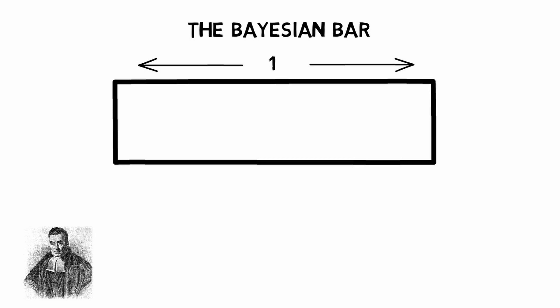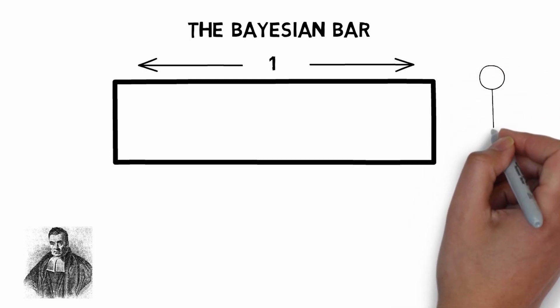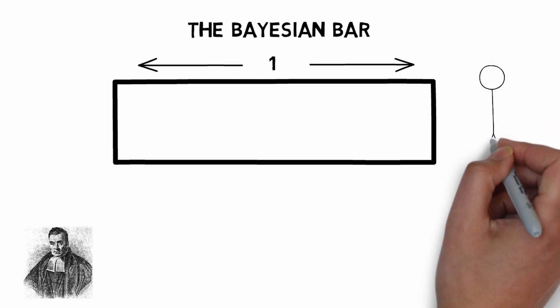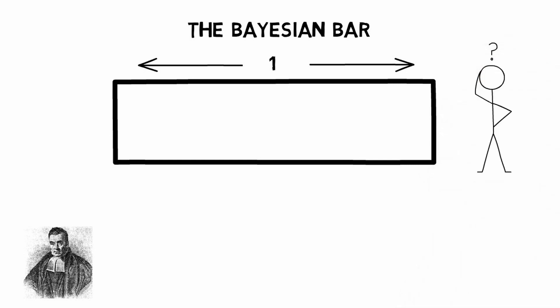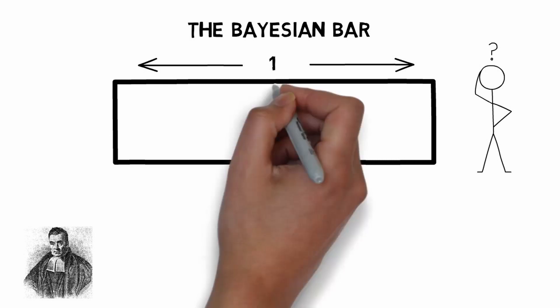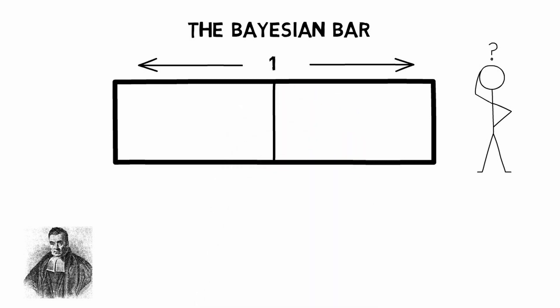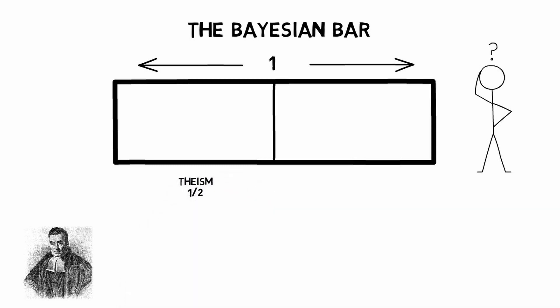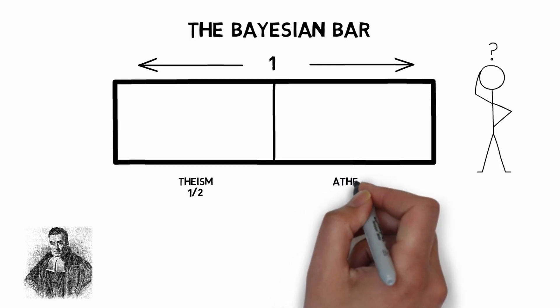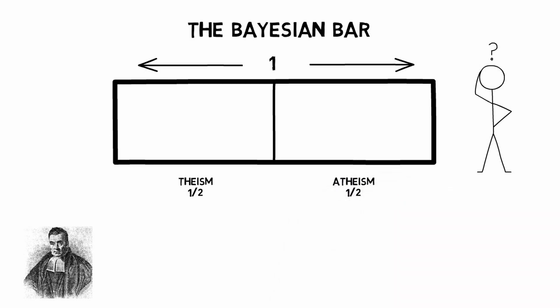We can now split the bar up into further probabilities. So let's imagine someone who is what we'll call a perfect agnostic about God's existence, since they're 50-50 as to whether God exists. For this perfect agnostic, we can designate half the bar to represent how likely they think it is that God exists, which we'll call theism, and the other half to how likely they think it is that God doesn't exist, which we'll call atheism.